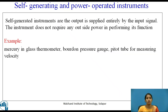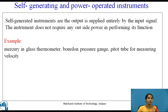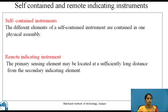Self-generating and power operated instruments. Self-generating instruments are those in which the output is supplied entirely by the input signal — the instrument does not require any outside power to perform its function. Examples include mercury-in-glass thermometer, Bourdon pressure gauge, and pitot tube for measuring velocity.